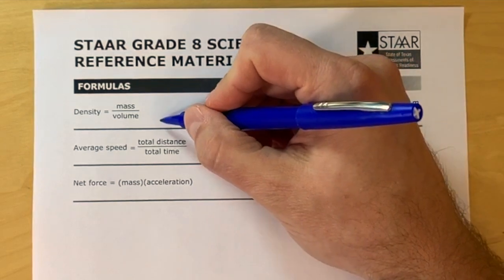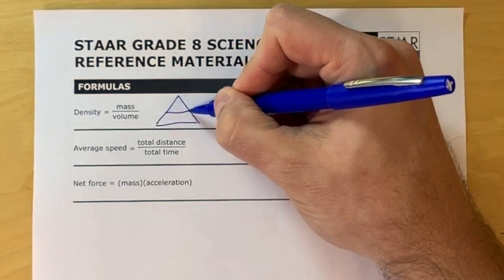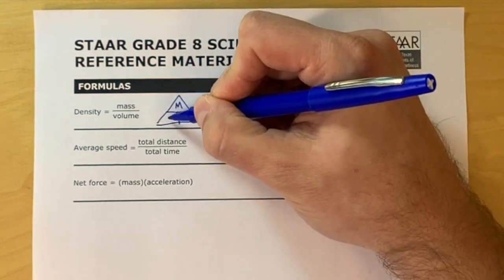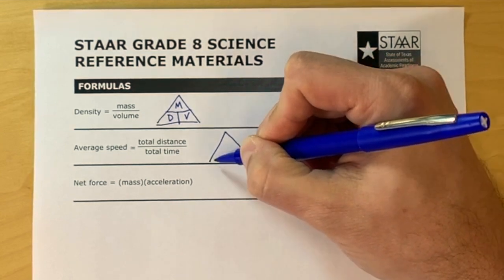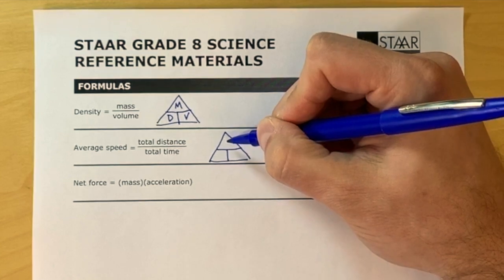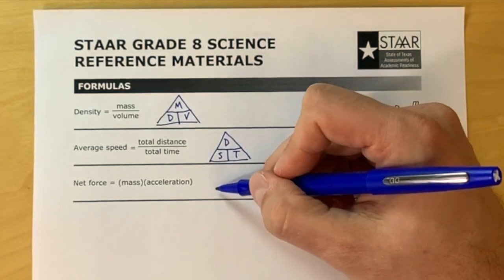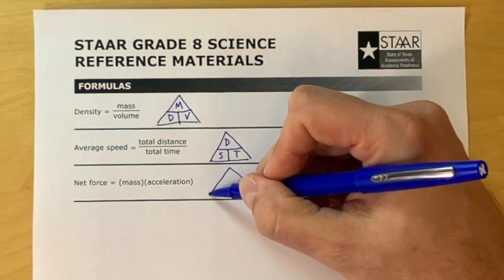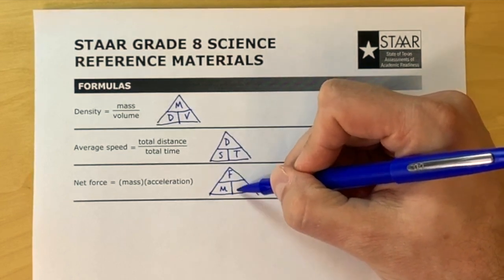Next, we're going to flip our paper over and work with the formula chart on the back. We're going to draw three formula triangles. Density equals mass divided by volume. Average speed equals total distance divided by total time. And net force equals mass times acceleration. You'll be able to use these triangles for any problem that you get when they give you two of the variables already.